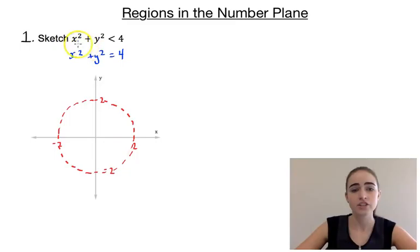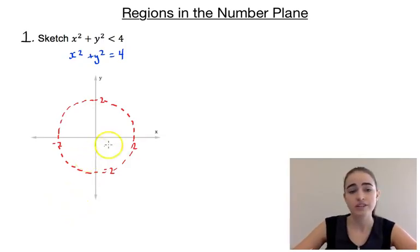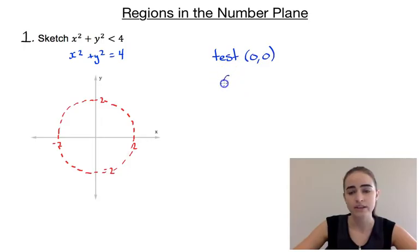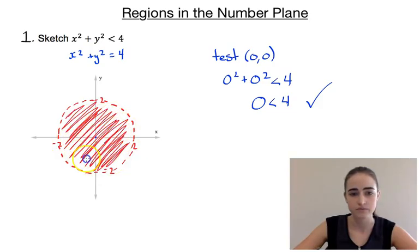We've got our rough sketch of the circle x² + y² = 4. Now we need to decide whether to shade inside or outside that circle. We'll test the point (0, 0) since it's not on the boundary. Substituting: 0² + 0² < 4 gives 0 < 4, which is true. So the point (0, 0) does lie in the region, meaning we shade the inside of the circle. That is the region that satisfies the inequality.